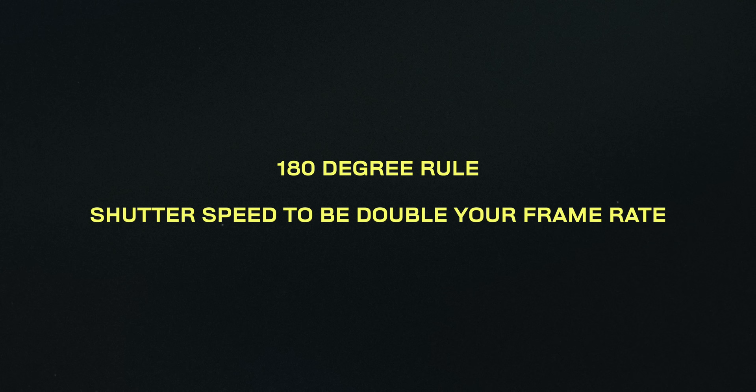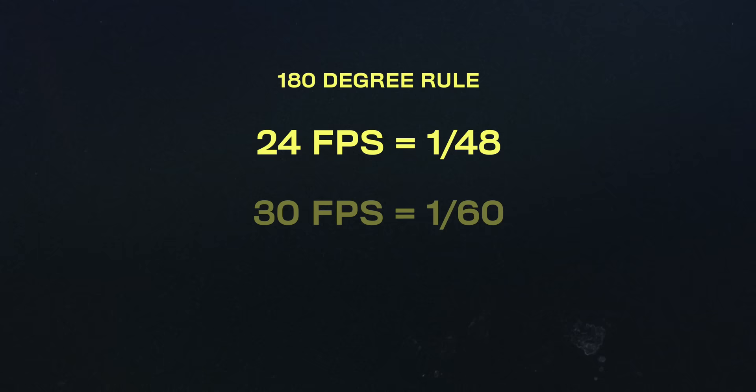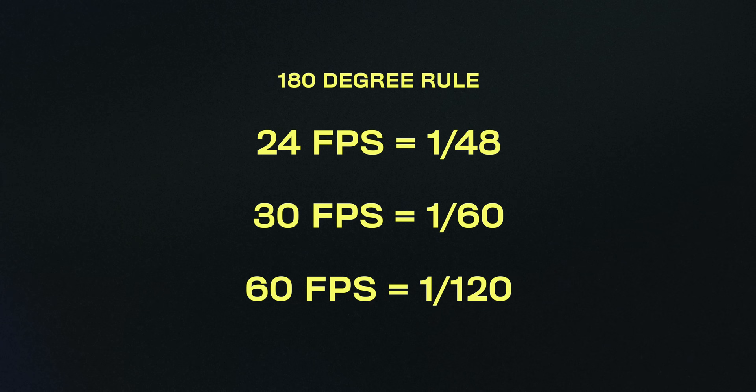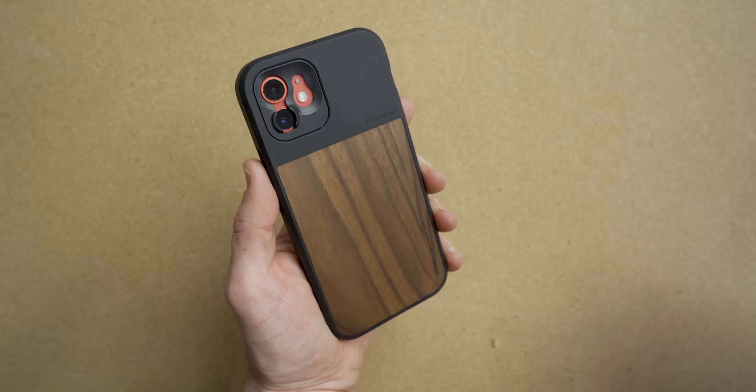There's a rule in filmmaking called the 180-degree rule. Whether you follow it or not is up to you, but it basically means setting your shutter speed at double your frame rate. If your frame rate is 24fps, you want your shutter speed at 1/48th. This gives you that natural, organic, smooth-looking motion blur whenever there's a lot of motion in your frame. If you're shooting at 30fps, you'd want 1/60th for your shutter speed.